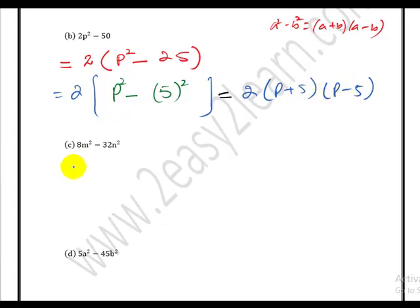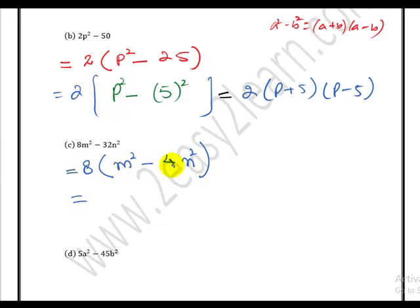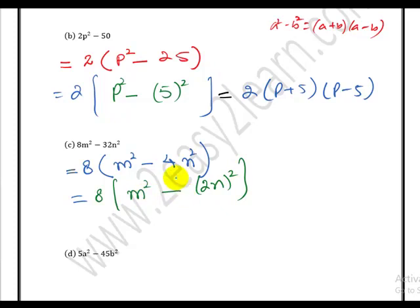Part c: what is common? 8 is common. What is left is m squared minus 4n squared. m is a square term, 4 is a perfect square, n is a square term. We can factorize further: 4 is the square of 2, so we write (2n) squared. There is a negative sign, so we apply difference of squares. The final answer is 8(m plus 2n)(m minus 2n).